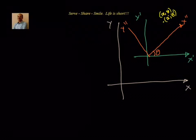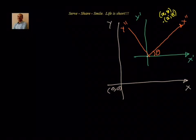We want to find out the relation between x dash and y dash. For that, first let us plot. Let us say that the original coordinate system origin is 0, 0. Now shift it to h, k.